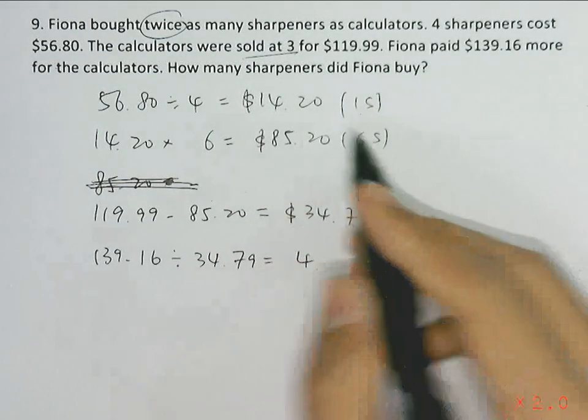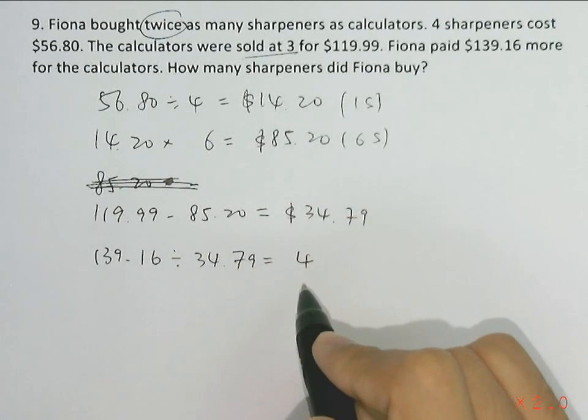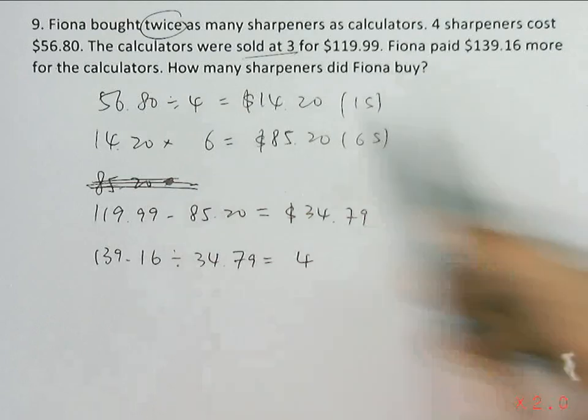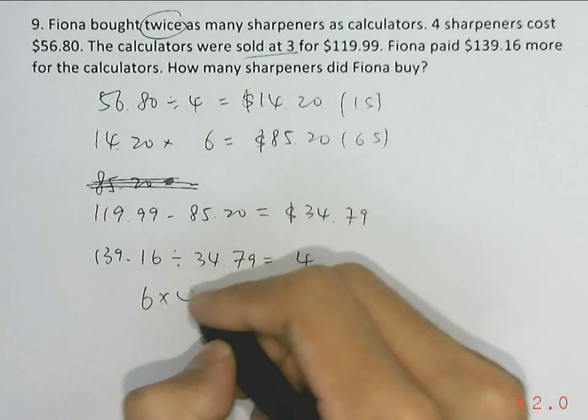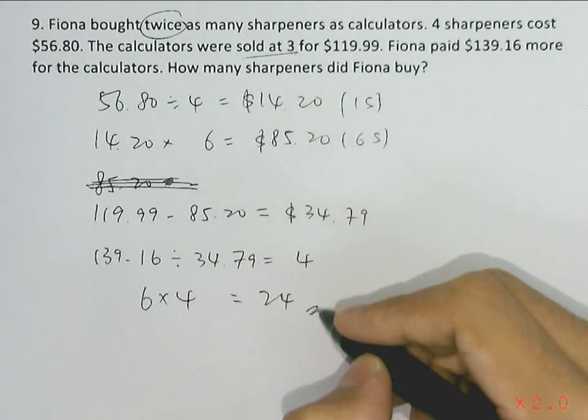The question is asking how many sharpeners did Fiona buy. So four groups, the number of sharpeners in each group is six, so the total number of sharpeners will be 6 multiplying by 4 groups, giving us an answer of 24 sharpeners.